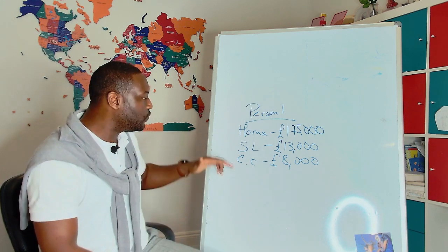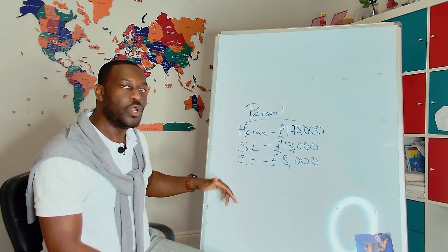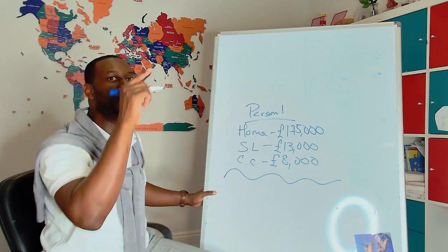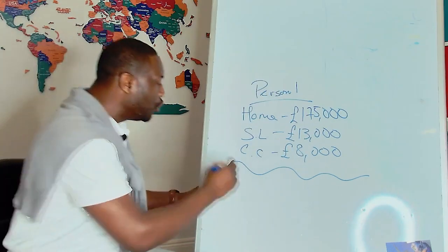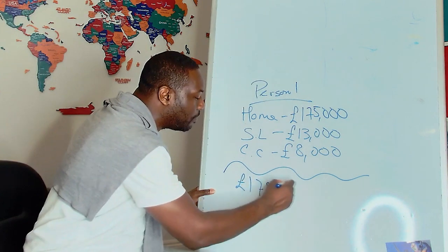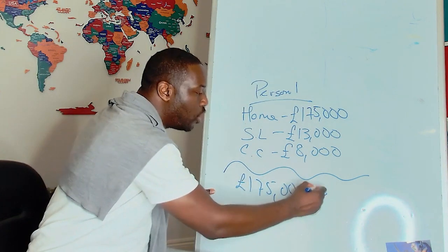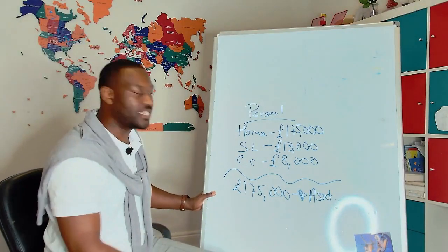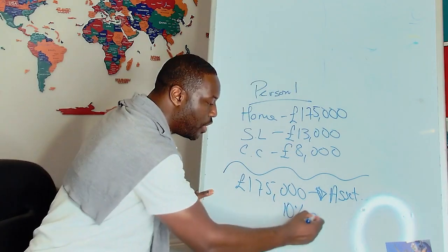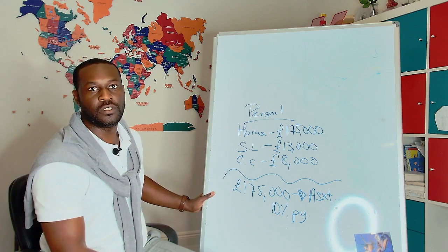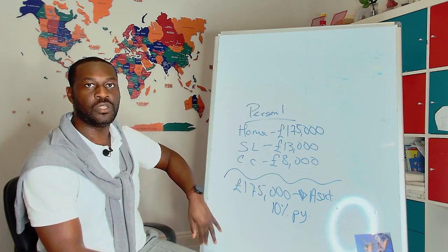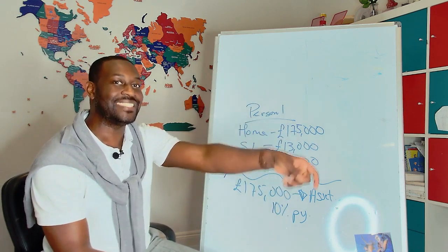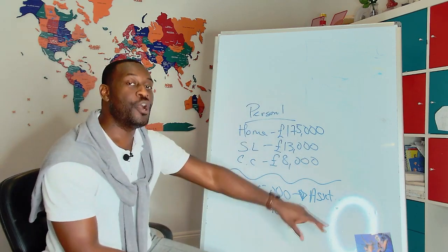What would happen if you turned this scenario around? What would happen if you did have £175,000 as your largest debt that you owed, but you owed £175,000 for an asset which pays you back 10% per year? Do you see how every single thing in this scenario changes now?